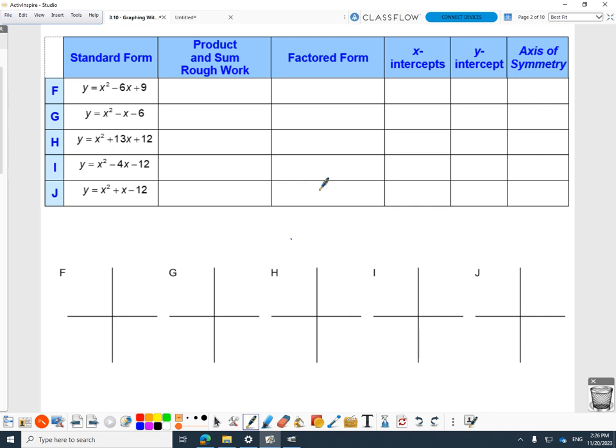What multiplies to 9 but adds to negative 6? Negative 3 and negative 3. Those two numbers, when you multiply them together, you get positive 9. But when you add them together, you get negative 6.